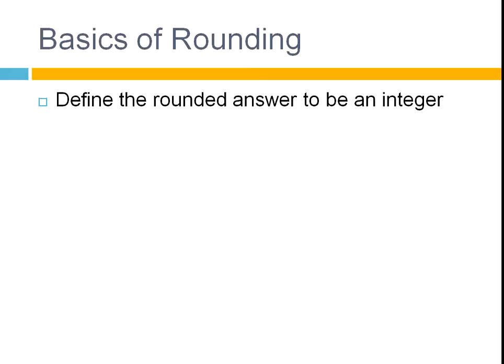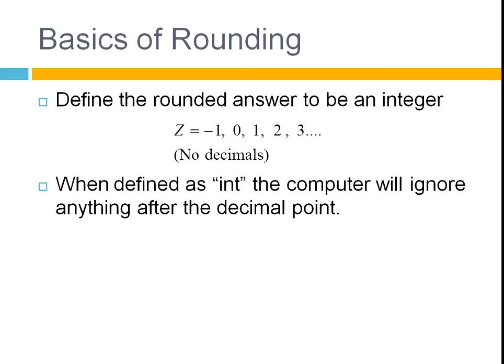I want to define the rounded answer to be an integer. That means it's not going to have any decimals, so it's a number like 1, 2, 3, which is a rounded number. And when a computer is told that a number is an integer, it will just ignore everything that comes after the decimal point, which is what you want when you're rounding. For example, 1.9999 — the computer will just see that as 1. It will ignore all of those 9s because it's been told it's an integer. It will only save this first value.